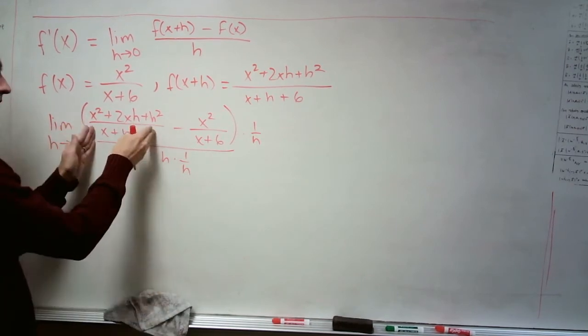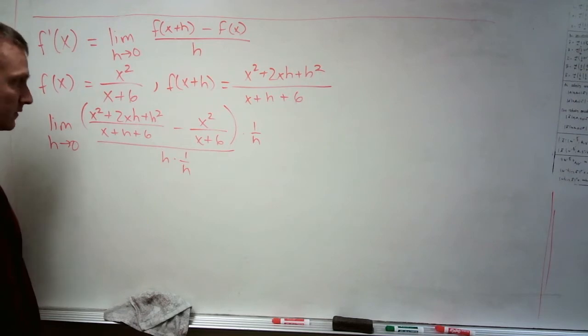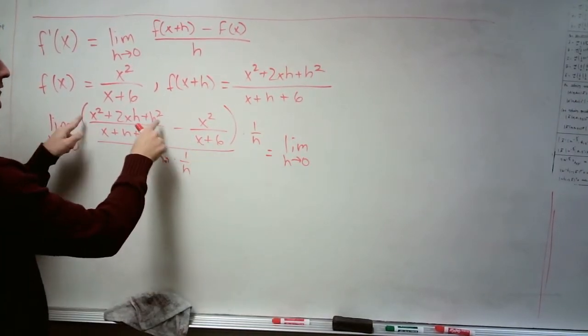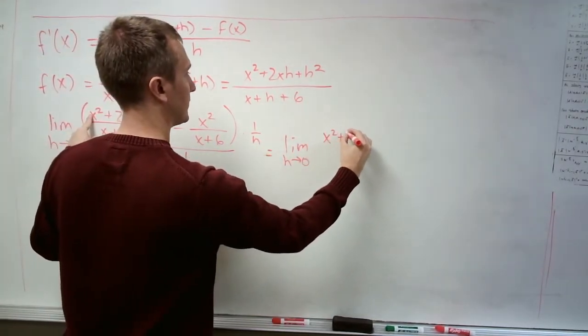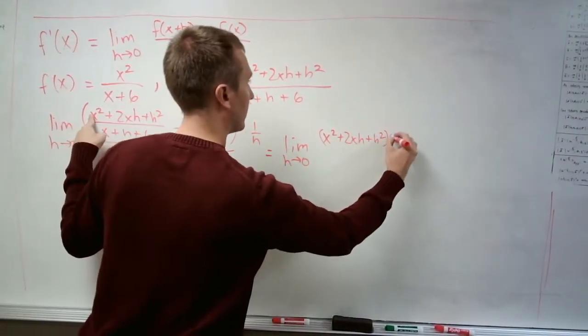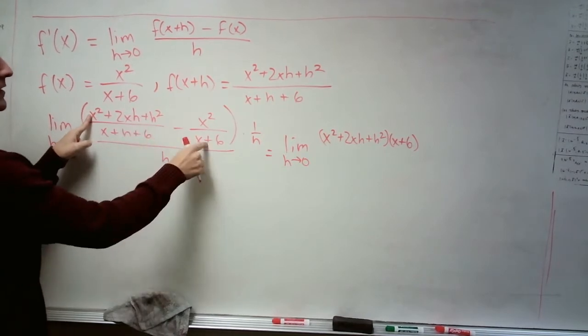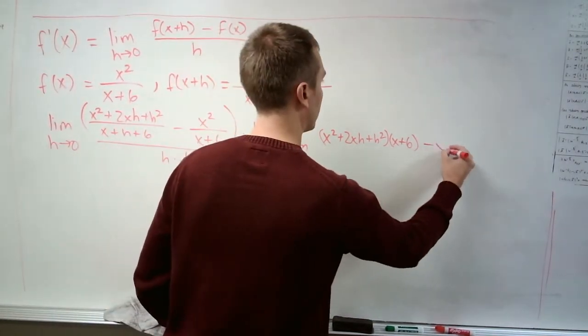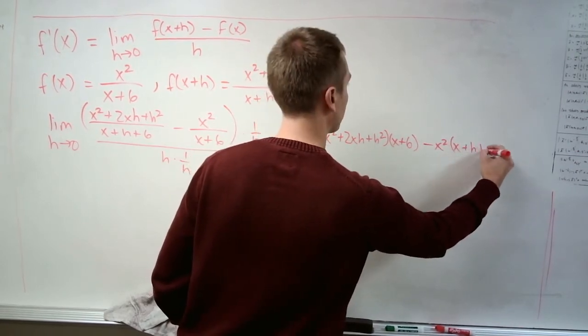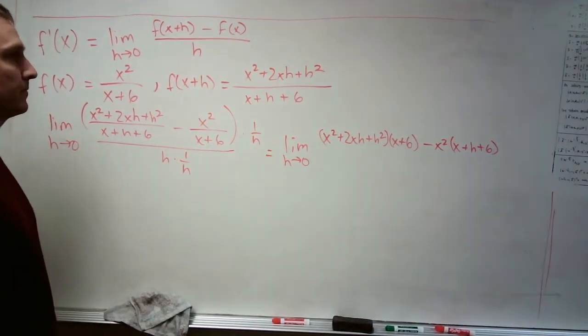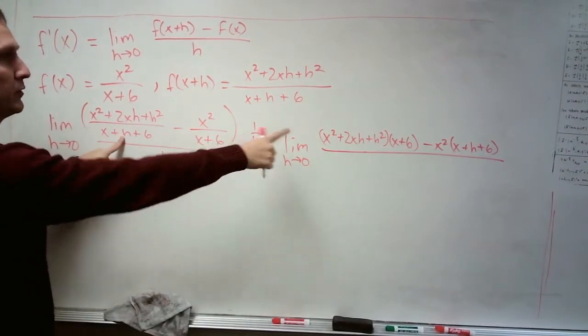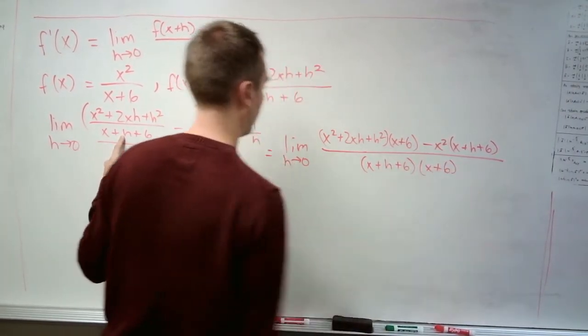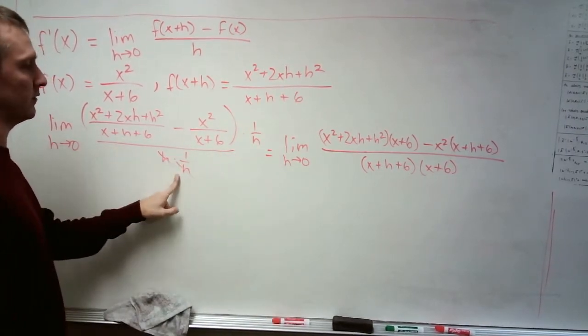That common denominator is going to be this denominator times this denominator. Here we go then. This denominator does not have this factor of x plus 6. So x squared plus 2xh plus h squared times x plus 6, this times this. This denominator does not have this factor in it. So this is going to be multiplied by here and here. So x squared is multiplied by it, x plus h plus 6. Okay. Our common denominator again was the product of these two. That's why we had to multiply those factors through over there. So it is x plus h plus 6 times x plus 6. And we can't forget this little guy over here. The one over h we multiply by in order to get rid of the compound fraction.